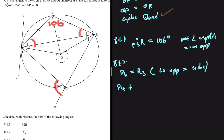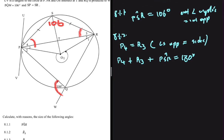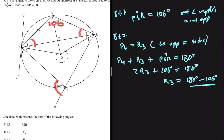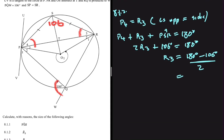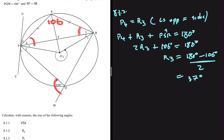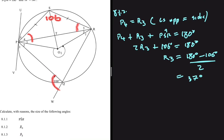Since angles opposite equal sides are equal, P4 equals R3. We can say P4 plus R3 plus PSR equals 180 degrees — the sum of angles in a triangle. Since P4 equals R3, we have 2×R3 plus 106 = 180 degrees. So R3 equals (180 − 106) ÷ 2, which gives 37 degrees. That is the size of angle R3, and also P4.